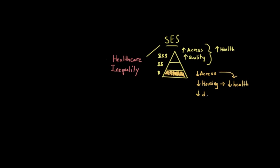Also, having a poor diet could significantly impact a person's health. And this is especially true for those living in food deserts, which are areas that have a lot of access to fast food, but have almost no access to supermarkets or fresh produce.